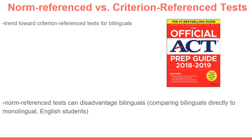There's been a trend toward criterion reference tests for bilinguals because norm reference tests can disadvantage them. Often, norm reference tests compare bilingual students to monolingual English students, and especially at the beginning years of school, it's an unfair comparison. Most bilingual programs in the beginning concentrate on developing students' first language ability — their native language — so that they can transfer those abilities to their second language, English. As a result, students often receive less exposure to the English vocabulary terms being tested on norm reference tests.